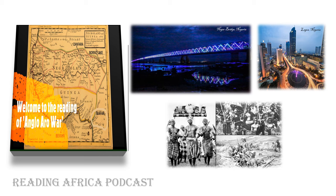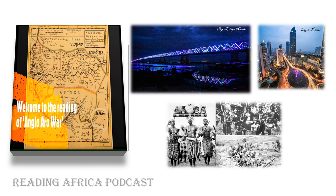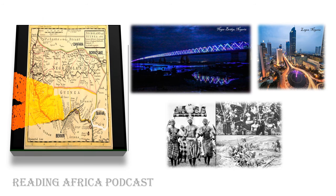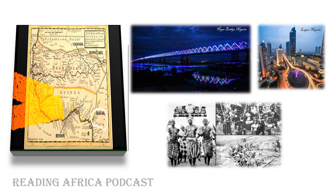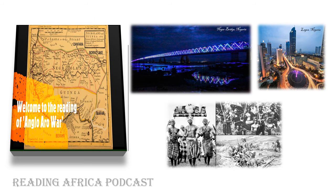While the British prepared for the invasion of Aro Chuku in November 1901, the Aro launched their last major offensive before the Aro expedition by the British forces. Aro forces led by Okoro Toti sacked Obiegu, which resulted in 400 people dying. This attack quickened British preparation for their offensive.